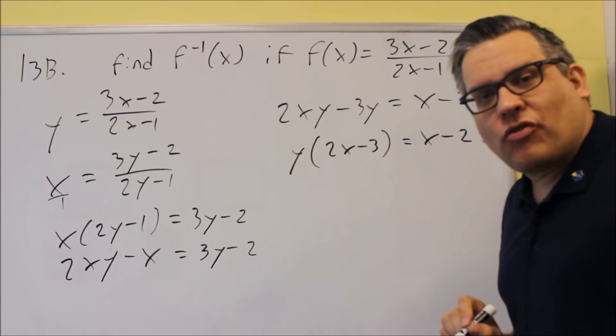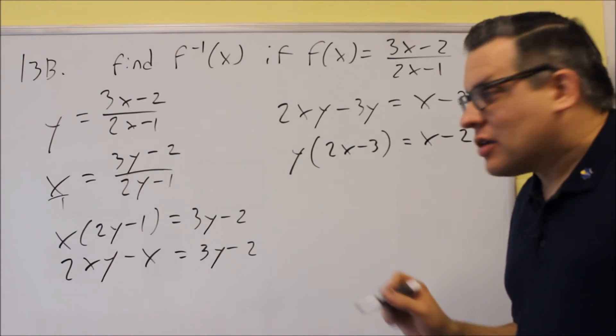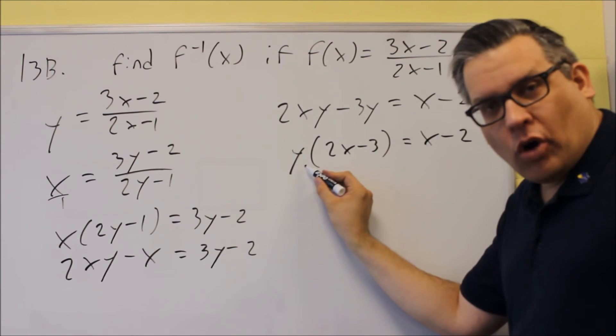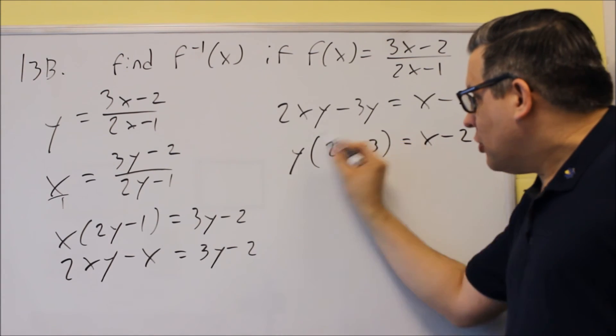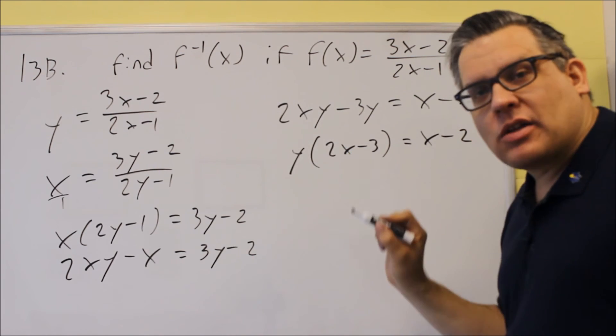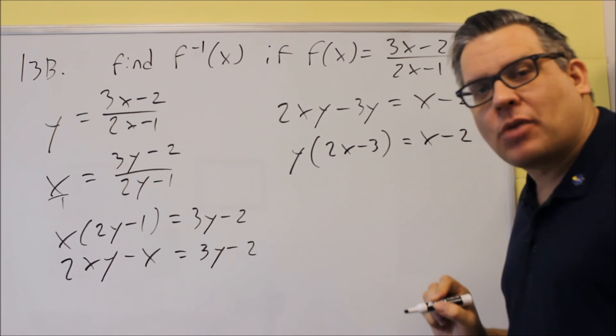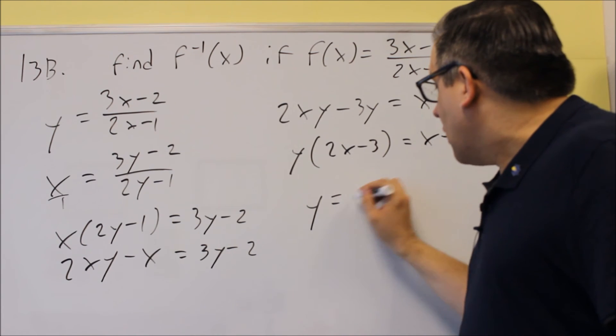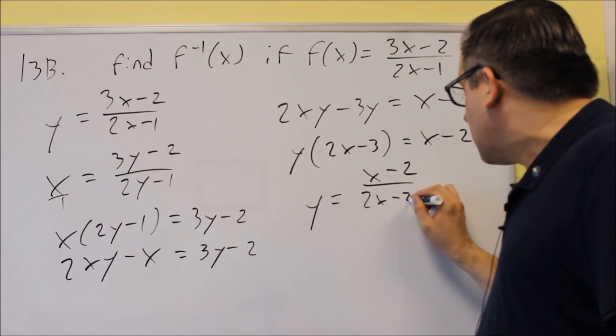The reason why you want to factor out the y is because that way both the y's turn into 1, and now you can divide both sides by 2x minus 3. You want the y by itself, so this is the one you're going to be dividing by, and you'll get x minus 2 over 2x minus 3.